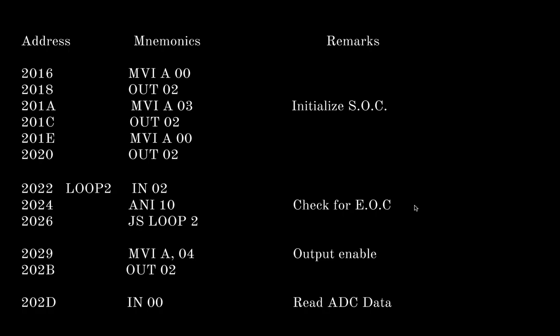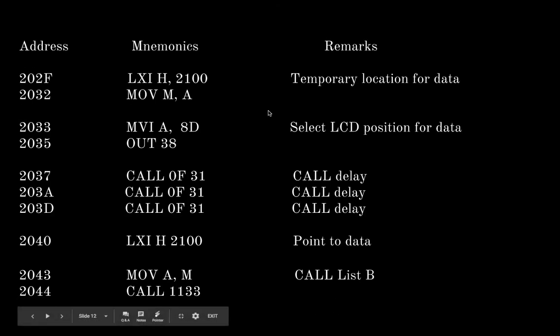We initialize a loop where we check for end of conversion signal. Until and unless we get the end of conversion signal from the ADC, we'll continue going in this loop. As soon as we get it, we'll enable the output, and the 8255 would be able to read the ADC data. And now it will send it to the 8085 microprocessor.